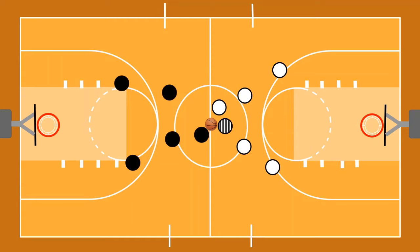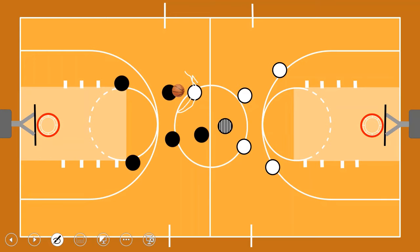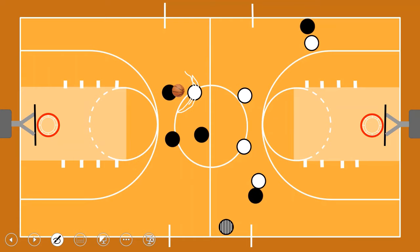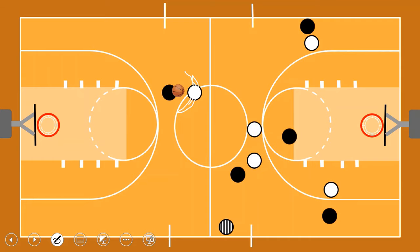The game starts with a tip-off. All your players — the black uniform on one side, the white on the other. The ball is tossed, your player jumps and gives a pass to another player. Your opponent, since it's five-on-five, each player tries to block one opponent and come close to prevent you from getting near the basket.